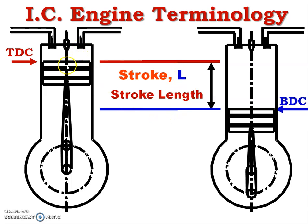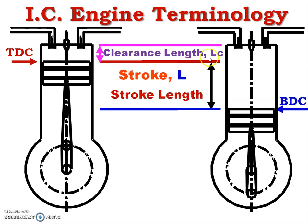The gap between the piston and the cylinder head when piston is at top dead center — that is the extreme top position — is known as the clearance length, denoted by the symbol LC. The gap is provided so that the inlet valve and exhaust valve can open easily, and there is no direct collision between piston and cylinder head or piston and valve, because piston is reciprocating at a very high speed.